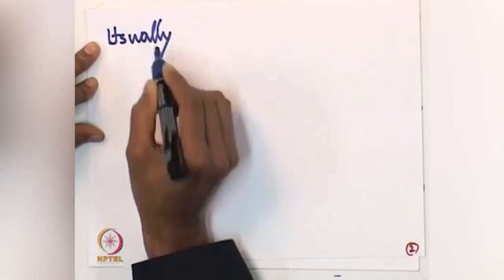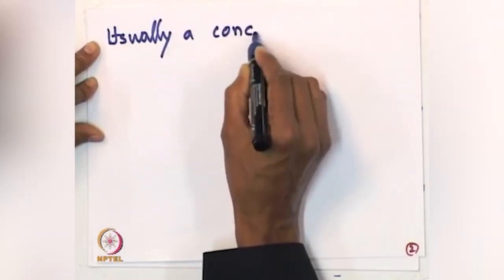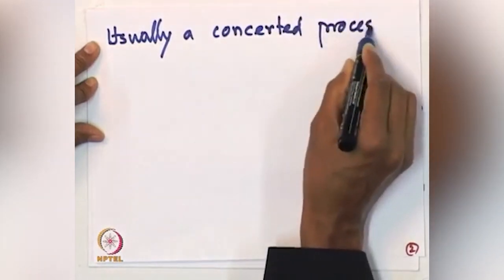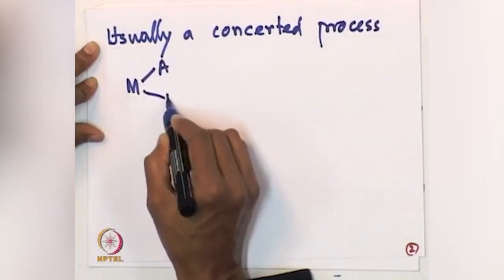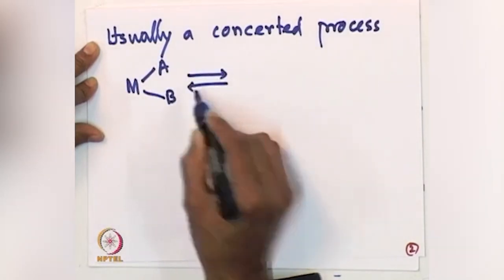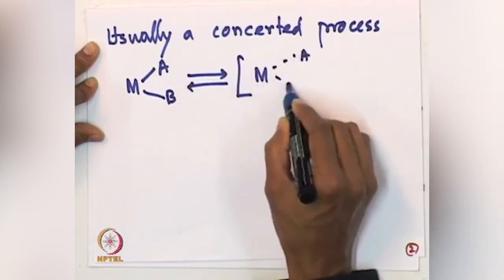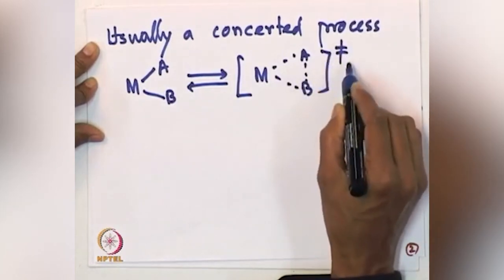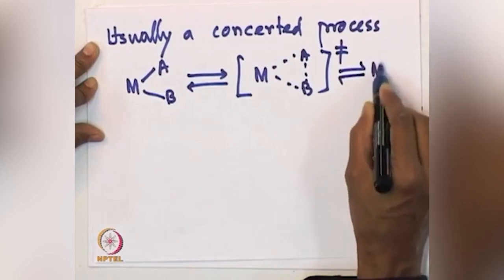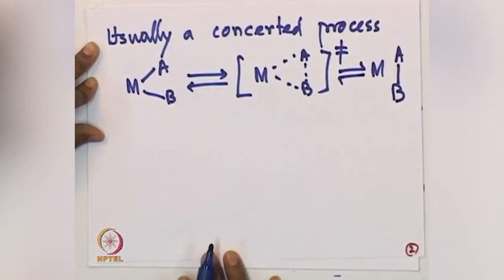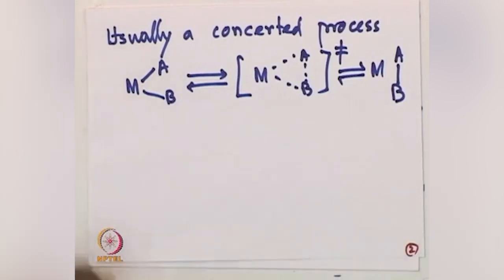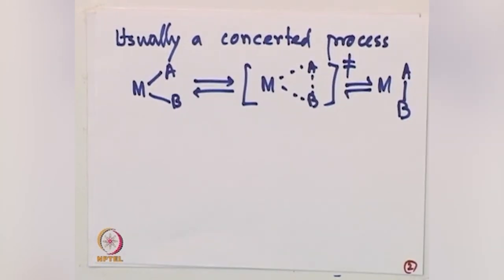Since reductive elimination is usually a concerted process, let us consider the transition state. Starting from the M-A-B complex, there is a transition state where these three components interact, and finally M and A-B are formed. It is a concerted three-centered process, so from M, A, and B interacting you finally get M and A-B back.